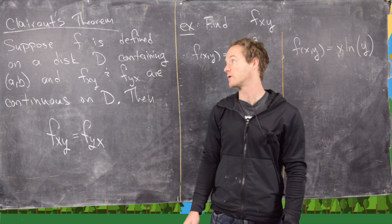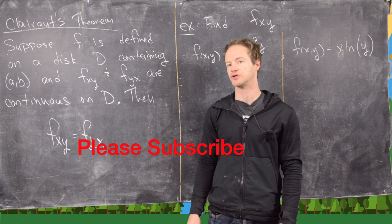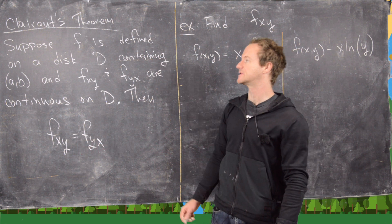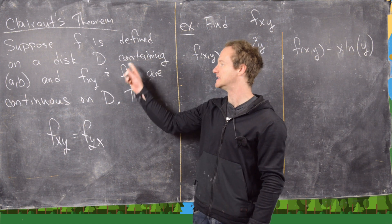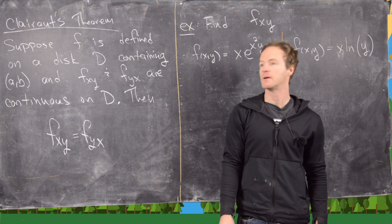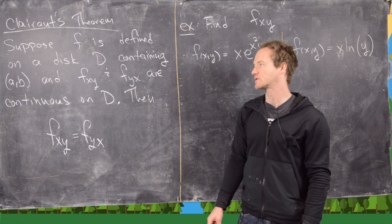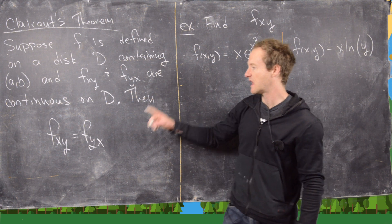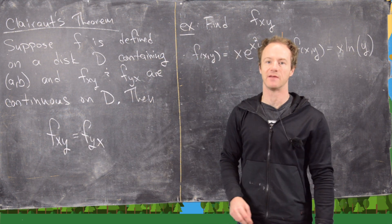In this video we're going to look at something called Clairaut's Theorem and some higher order partial derivatives. Let's suppose that f is a two-variable function defined on a disk D that contains the point (a, b), and that f_xy and f_yx are continuous on D. Then f_xy and f_yx are the same.